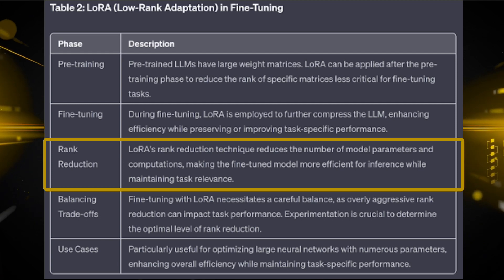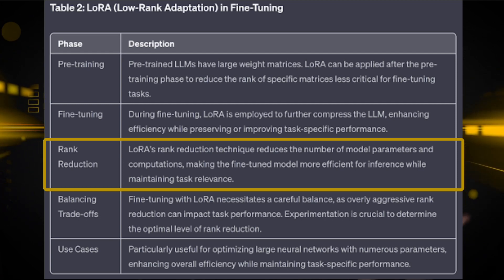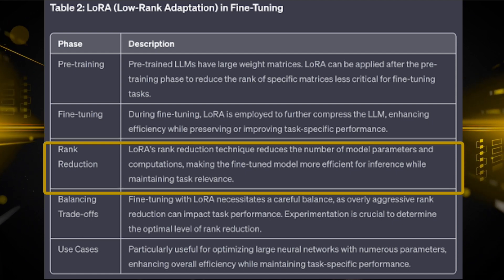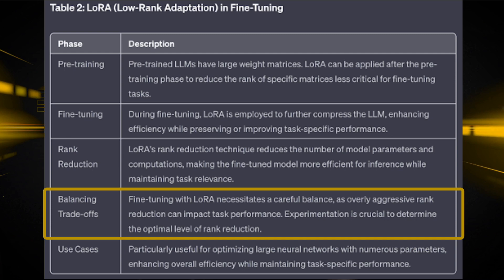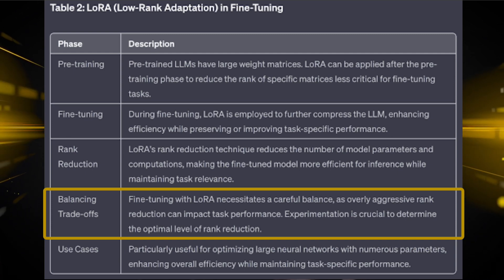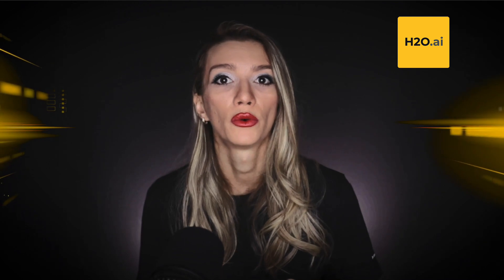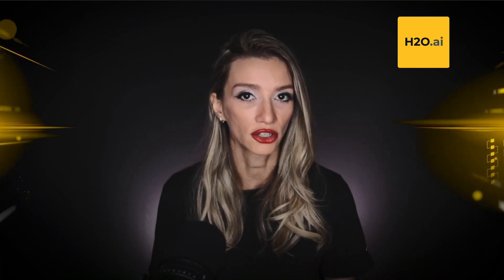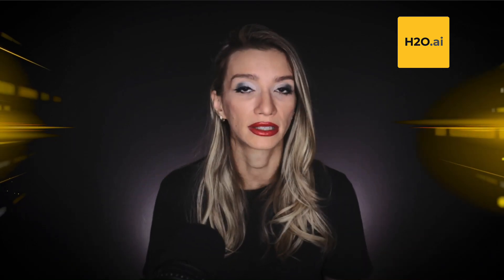The rank reduction in LoRA helps reduce the number of parameters and computations, making the fine-tuned model more efficient for inference while maintaining task relevance. Similar to quantization, fine-tuning with LoRA requires a careful balance — reducing the rank too aggressively may impact task performance, so practitioners need to experiment with different degrees of rank reduction to find the right balance. Both quantization and LoRA can be seamlessly integrated into the fine-tuning stage of LLMs, endeavoring to achieve a harmonious equilibrium between model efficiency and task-specific performance, making them particularly apt for fine-tuning in scenarios where resources are limited.